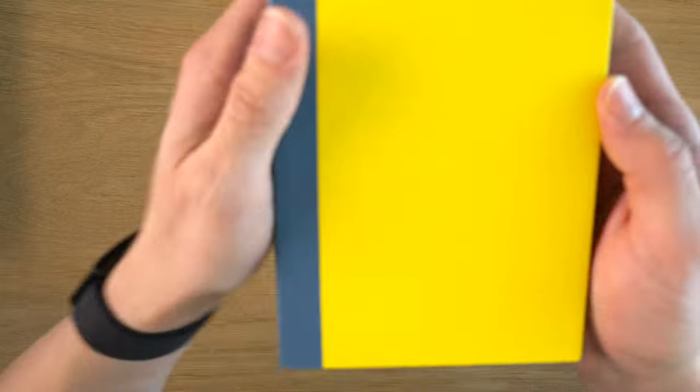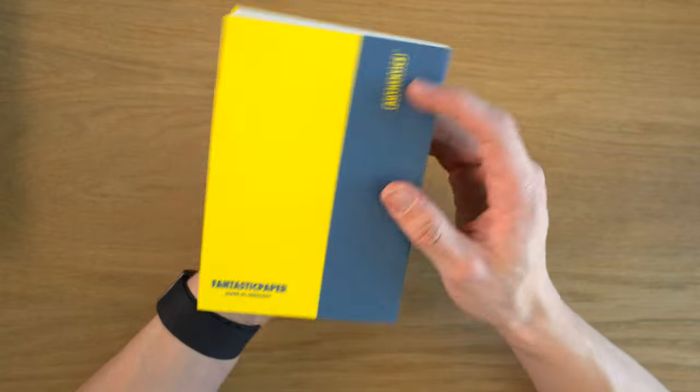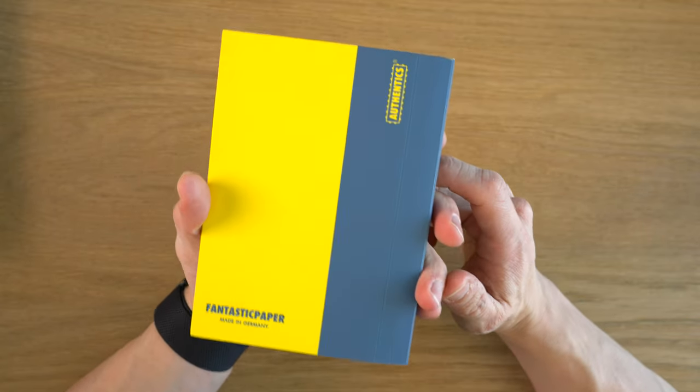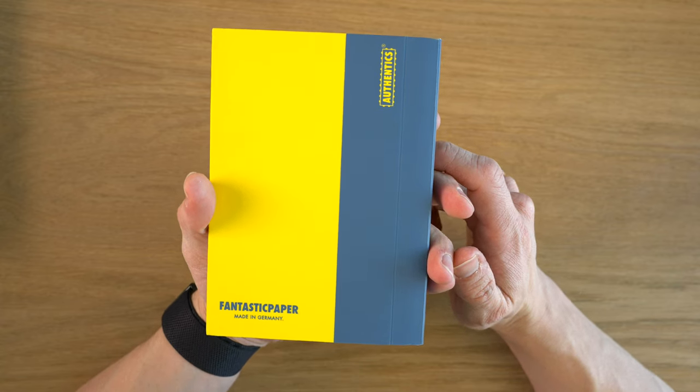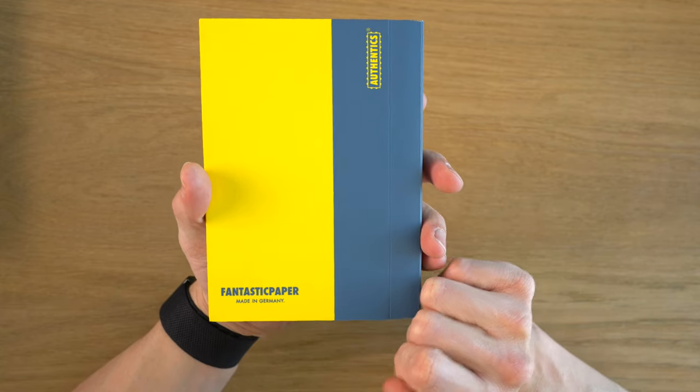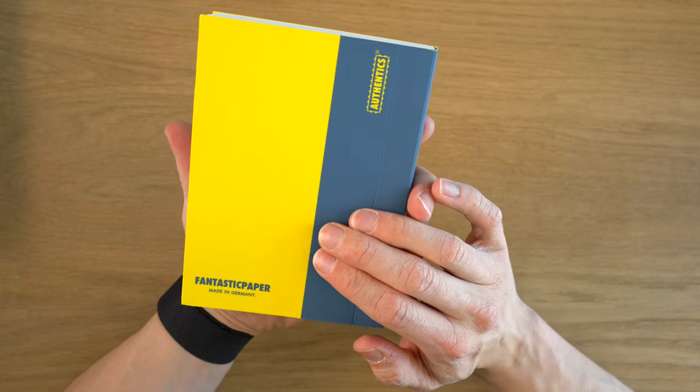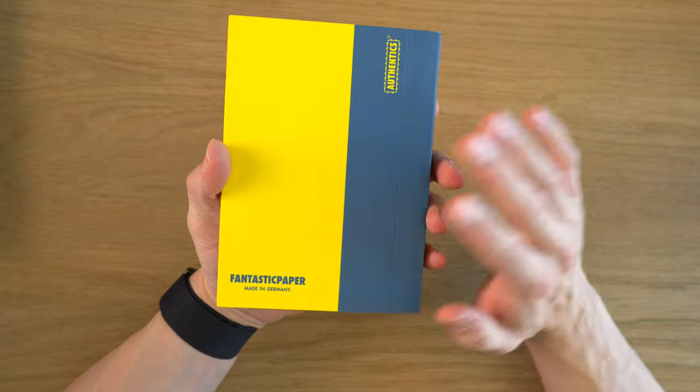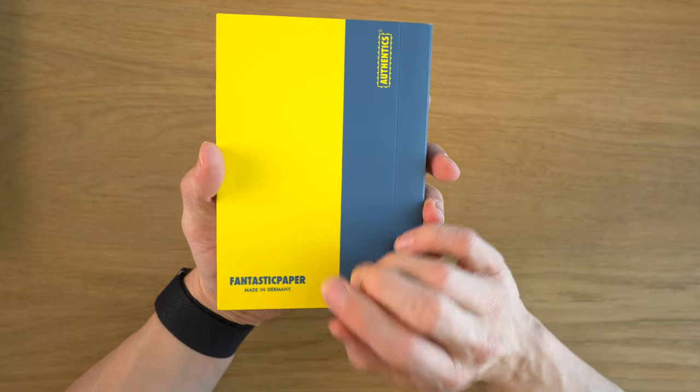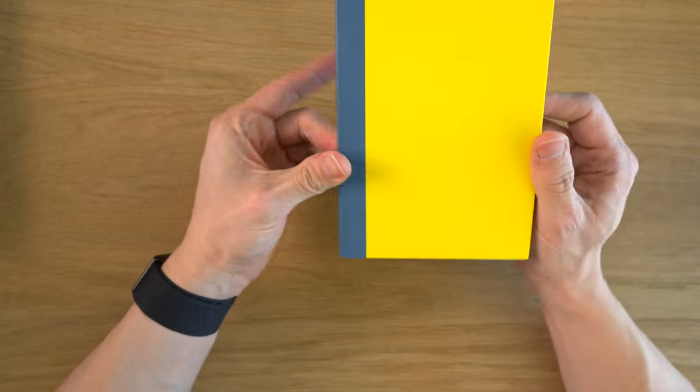All right, let's get on with the review. This is the Fantastic Paper Notebook by Authentics. I almost forgot what they were called. Authentics is like a German design brand. I think they mostly focus on home goods, but they have this fantastic paper line of notebooks. And I think they're really quite nice. They have big, bold graphics, even the packaging, which I unfortunately don't have anymore, had big, bold typography on it. Pretty cool looking, colorful notebook.